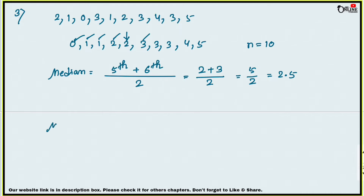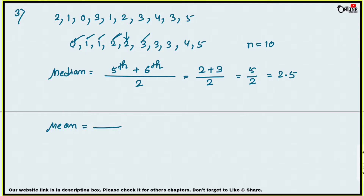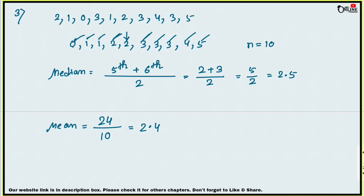Now find the mean. Add all the numbers: 0 + 1 + 1 + 2 + 2 + 3 + 3 + 3 + 4 + 5 = 24. Then divide by n, which is 10. So mean = 24 / 10 = 2.4. That is your answer.